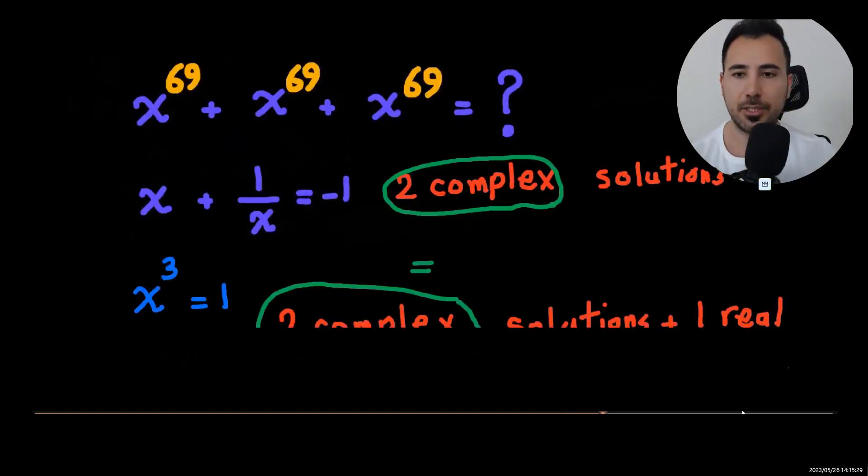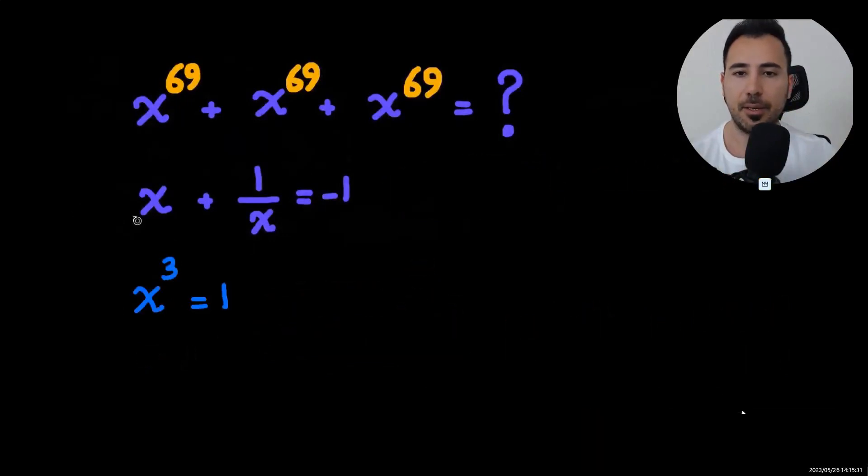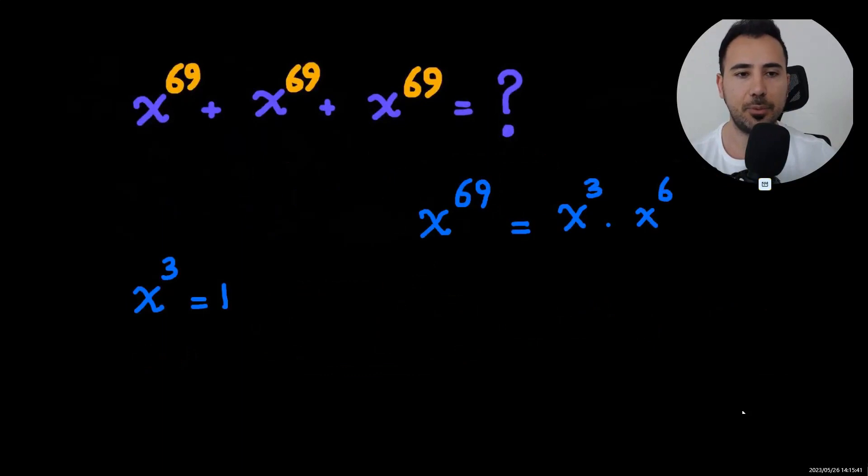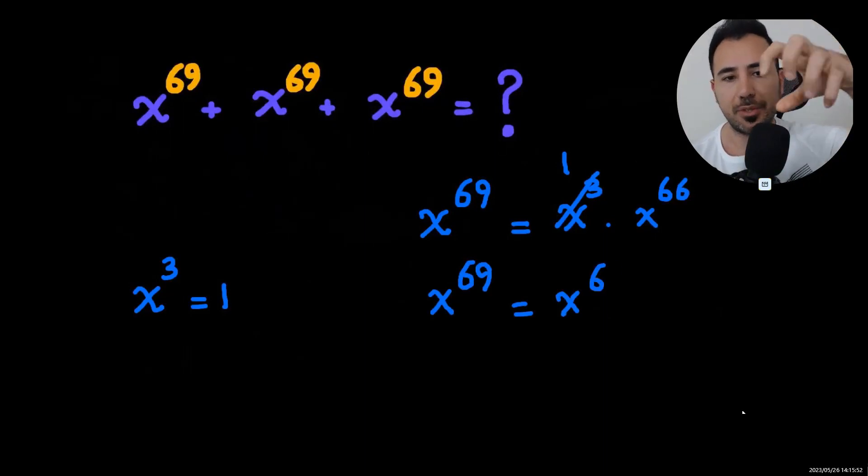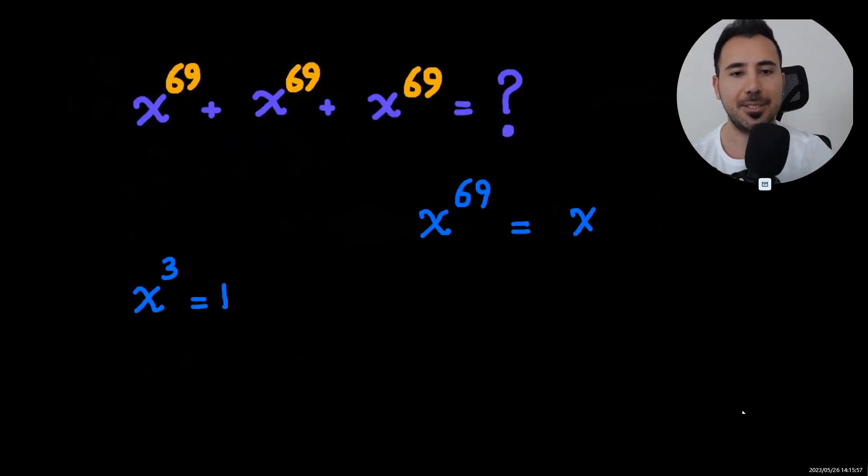Now everything is clear. We know that x cubed is one, and let's use that. x to the 69th is the same as x cubed multiply x to the power of 66, and x cubed is one. That means these two are the same. What does that tell you? We need to remove x cubed from x to the 69.